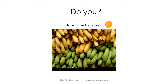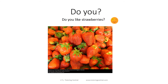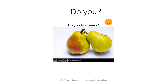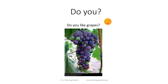Now if you want to ask someone else, you could say 'Do you like bananas?' and they could answer 'Yes, I like bananas' or 'No, I don't like bananas.' You could also ask 'Do you like strawberries?' 'Do you like oranges?' 'Do you like pears?' or 'Do you like grapes?' and they could answer 'I do like grapes' or 'No, I don't like grapes.'